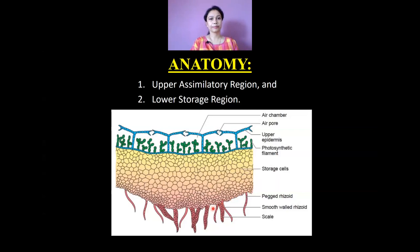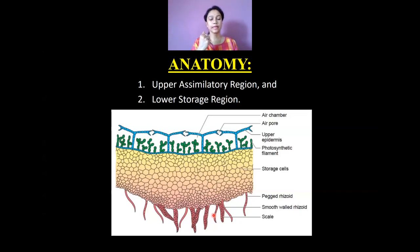The rhizoids are of two types: tuberculated, also known as pegged rhizoids, because they run parallel to the thallus, and smooth-walled rhizoids. Their function is the same — they help in the process of anchoring the thallus to the substratum. The scales have a nutritive function and also serve as conducting tissue to carry water and other minerals to the plant body of Marchantia.